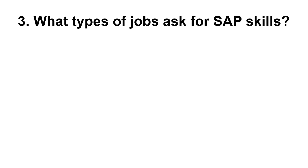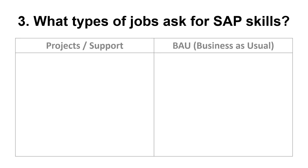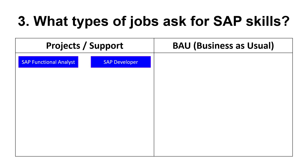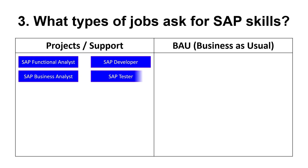And what types of jobs ask for SAP skills? Well, initially companies implement SAP, then upgrade the software periodically. These implementation and upgrade projects require large teams with many different roles available. Here are some examples: SAP Functional Analysts, to configure the SAP system. SAP Developers, for creating and changing SAP programs. SAP Business Analysts, to map and document business processes in SAP. SAP Testers, who use the documented business processes to test the SAP system.